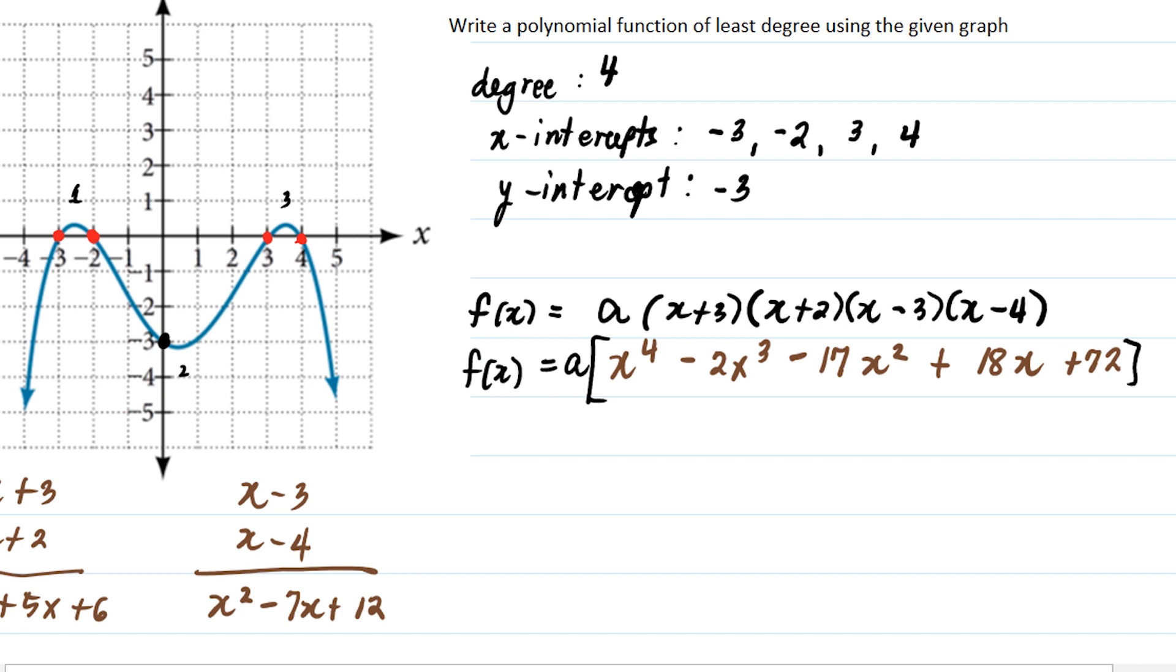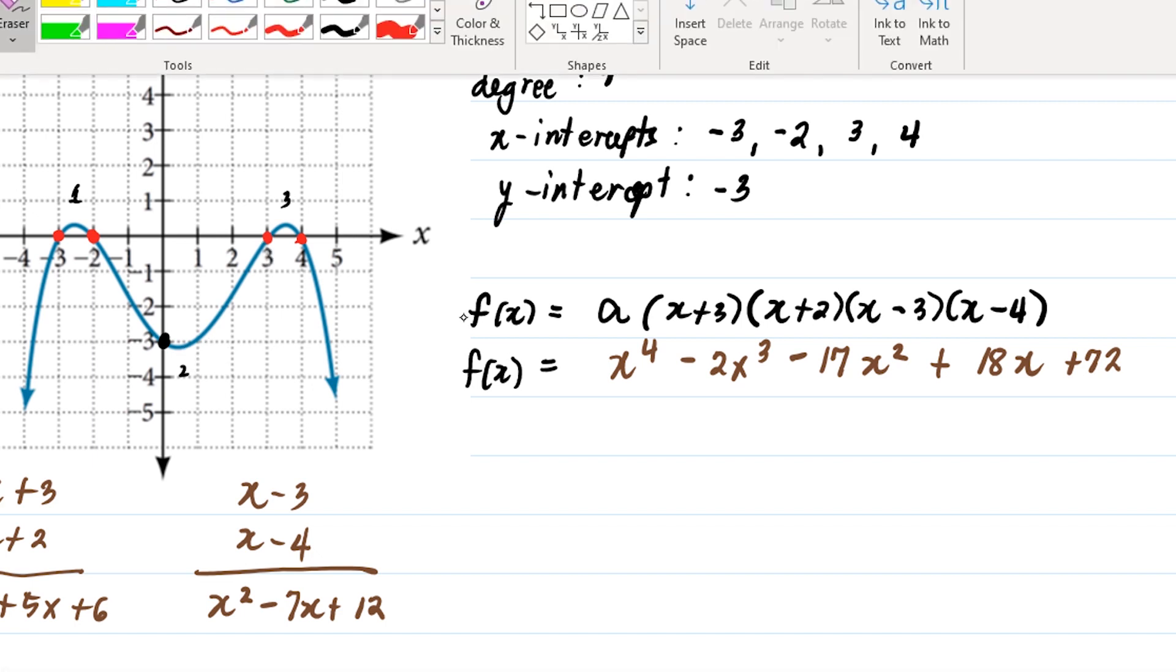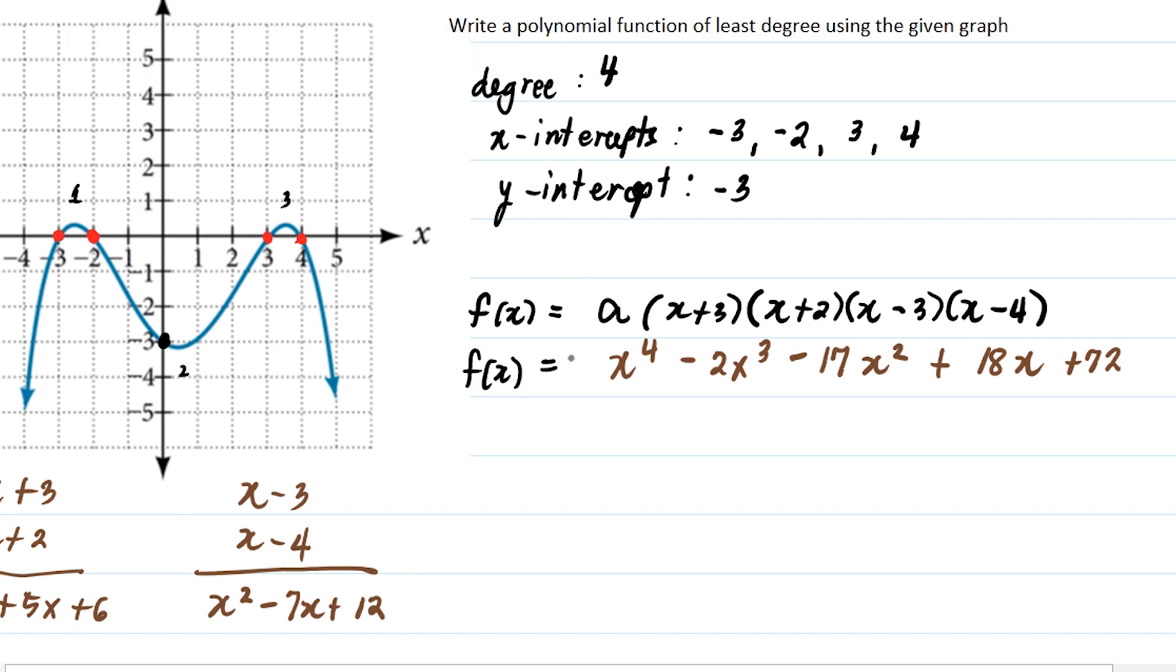This time, to find the value of 'a', for example, if we didn't put 'a' here, you told me this is the function. But take note. If you determine the y-intercept of this function, you will end up with 72. The y-intercept is 72, but that's not true. As you can see, the y-intercept should be minus 3. So we still have to compute for that one. The roots are these x-intercepts, but the y-intercept is different. That's the importance of having 'a' there because we want to make sure that minus 3 is our y-intercept and that it hits the other points on the graph.